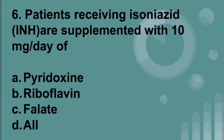Patients receiving isoniazid are supplemented with 10 mg per kg per day of pyridoxin. Pyridoxin is vitamin B6.